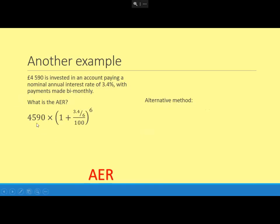Here's that calculation then. So the £4,590, the nominal interest rate is 3.4%, but it's being paid six times over the year, so we've got to share that out between the six times, divided by 100 to get the decimal equivalent, and then the compounding periods—there's six of them. It's being done six times over the year. That works out as £4,748.29 at the end of the year.